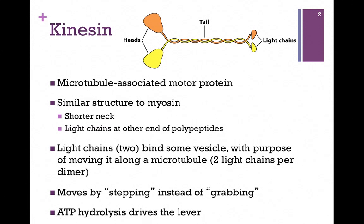As depicted in our cartoon structure here, the neck is shorter in kinesin. We still need those necks to move our heads, but the movement is slightly different, so we don't need to wrap those light chains around our necks to strengthen and support them. We still need light chains, but they serve a different function, and for that reason they're at the other end of the molecule.